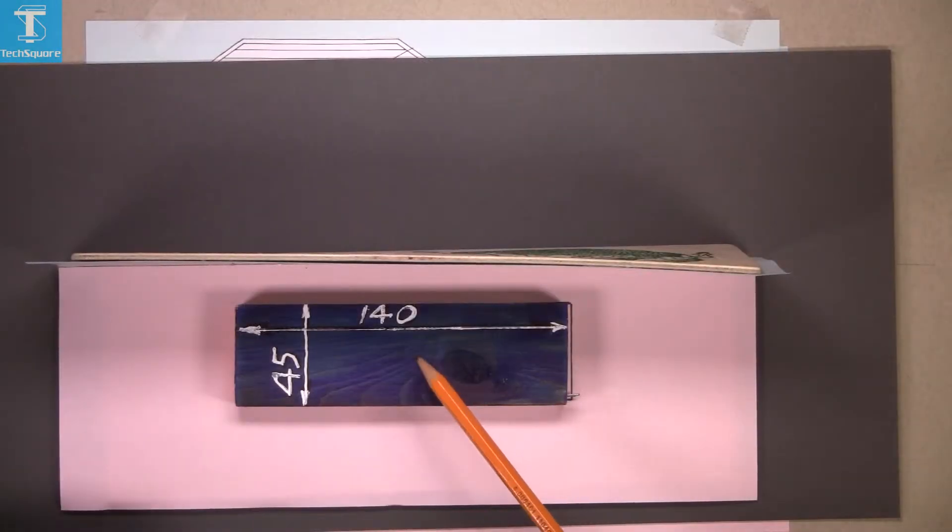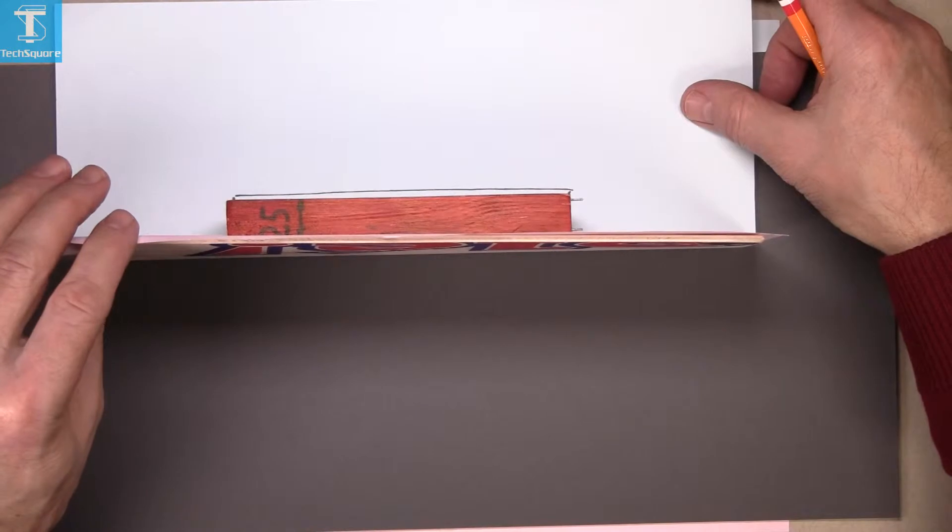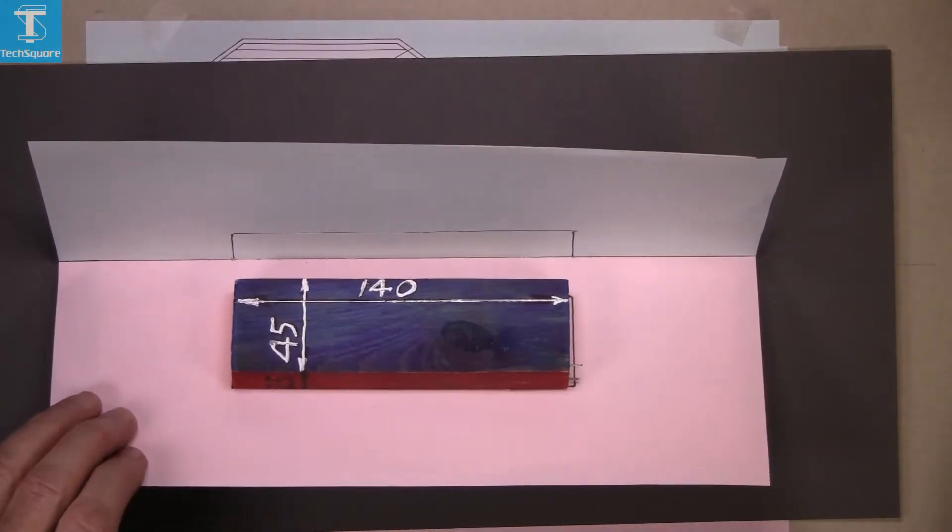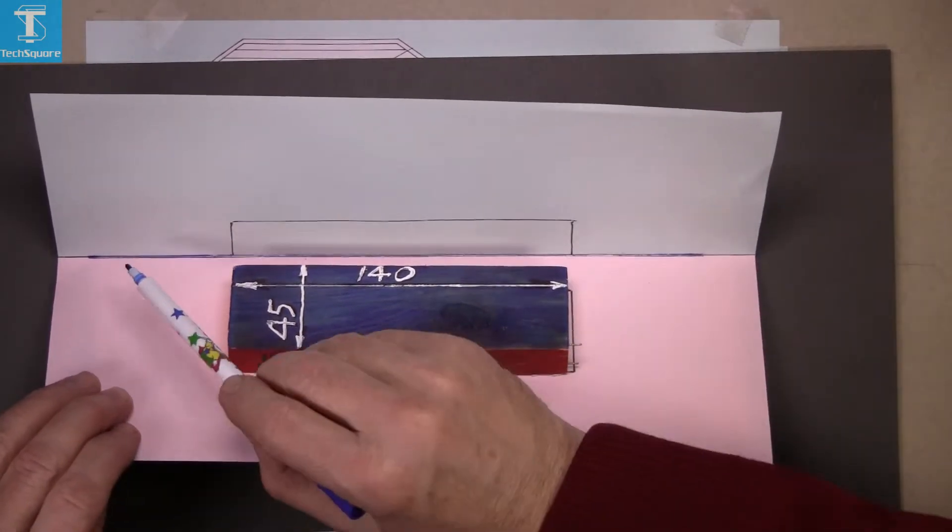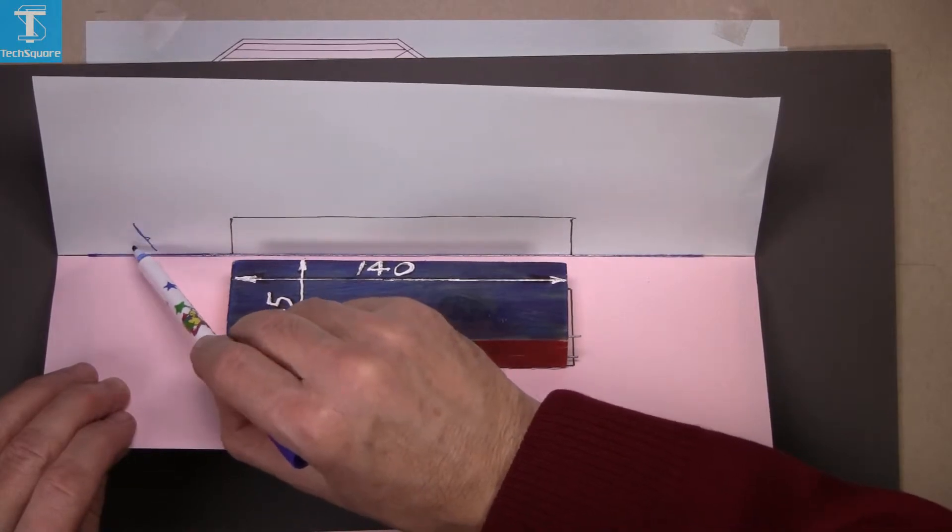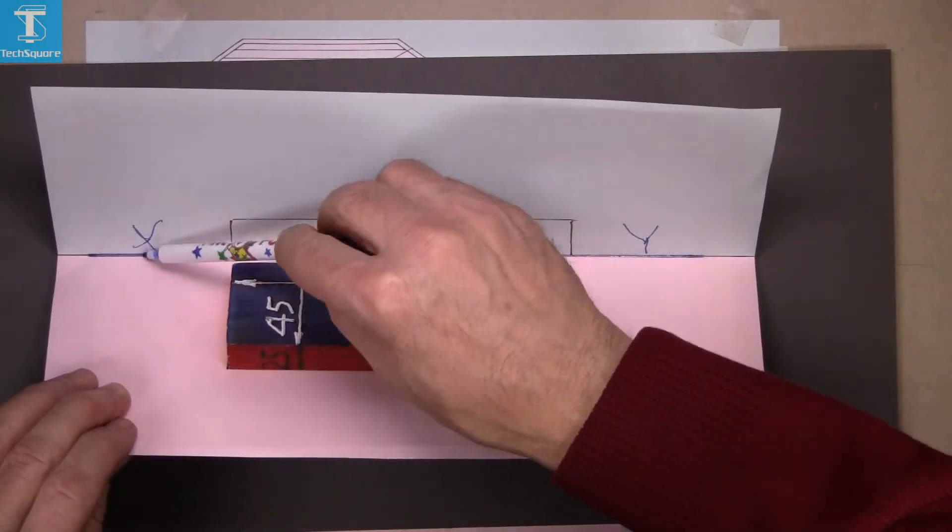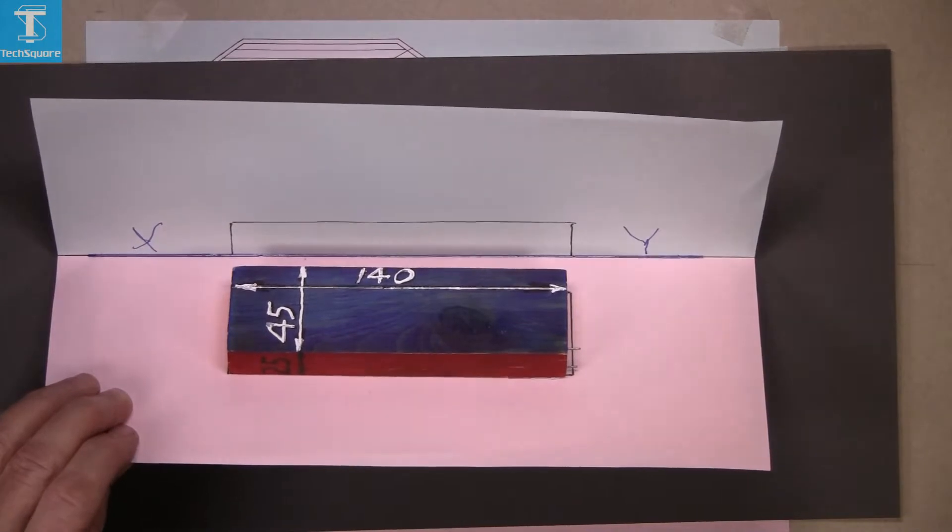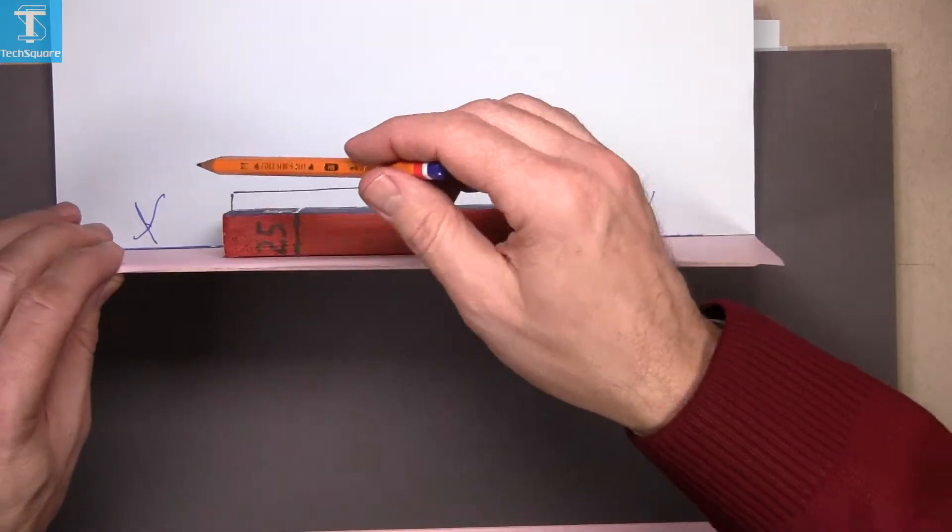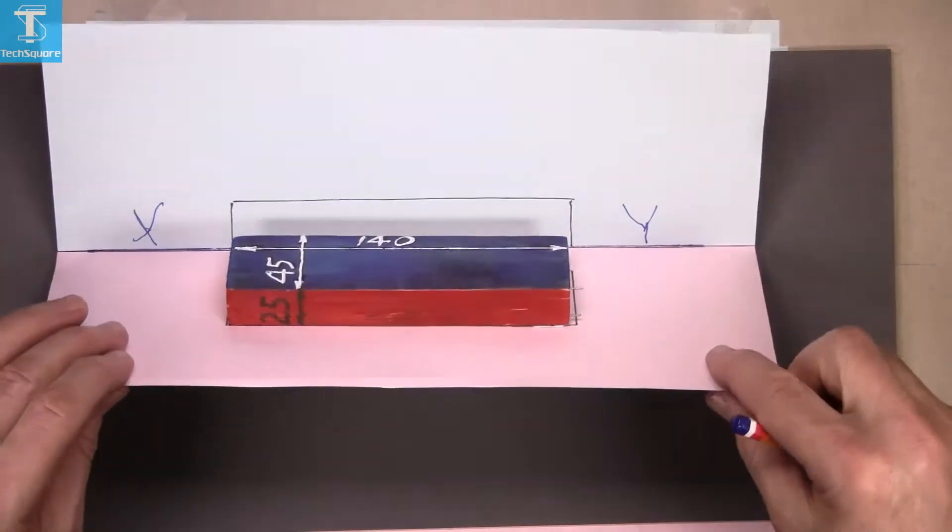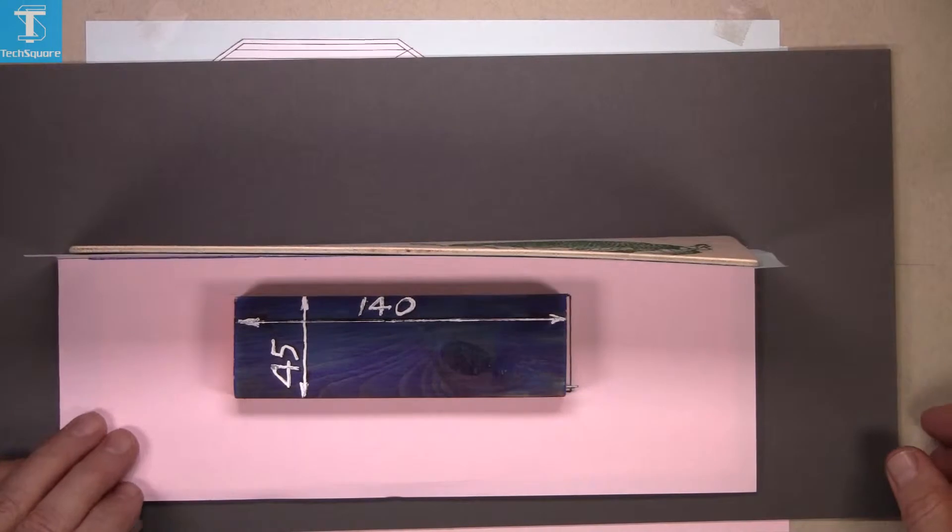Yesterday we drew this block here, this is the elevation in this position. The line between these two surfaces, in other words the line between the vertical and horizontal here, is called the XY line. Now when we're looking in this position, the XY line is the ground or the horizontal plane. When we're looking in plan here, the XY line is the wall or the vertical plane.